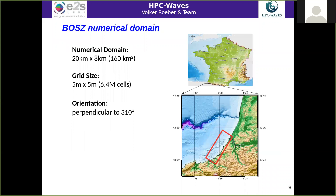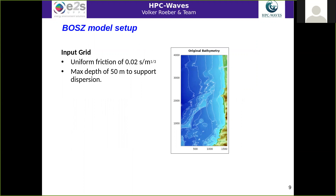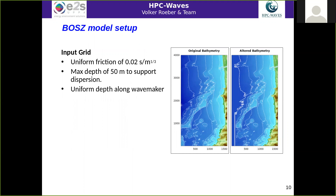The numerical domain is 20 kilometers by 8 kilometers with a grid size of 5 meters, resulting in a relatively large numerical domain of 6.5 million cells. We orient the domain approximately parallel to the coast to save computational effort. We use a uniform friction factor based on Manning roughness, and offshore depth is limited to 50 meters to support dispersion. This requires slight alteration of the bathymetry, as you can see in the right picture.